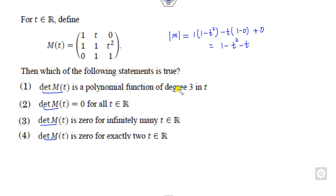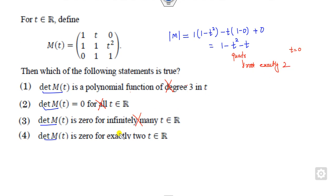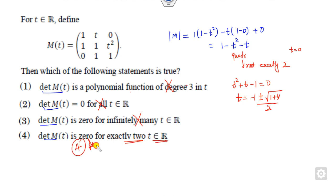Now look at the options. It is a polynomial function of degree 3 — that's cancelled out. It is 0 for all t, which is not true because if you consider t as 0 then it's non-zero. It is 0 for infinitely many t — that's also cancelled because this is a quadratic equation with exactly 2 roots. Checking whether they are real: using the quadratic formula, yes they are real. So there are exactly 2 real roots. The right answer is option 4.